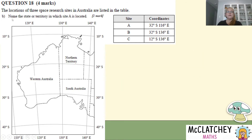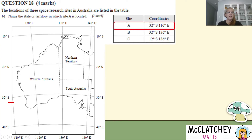Part B asks us to name the state or territory where Site A is located, worth one mark. We need to use the map to locate 32 degrees south and 116 degrees east. Latitude lines are marked along the side and longitude lines across the top. Remember: latitude comes before longitude — I remember this because 'LA' in the alphabet comes before 'LO.' So we need to find where 32 degrees south is — between the 30 and 40 degree lines. If you had a ruler in the exam you could work this out fairly precisely.